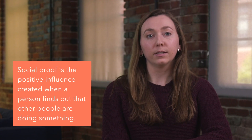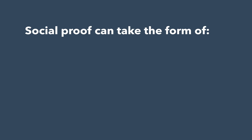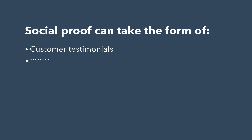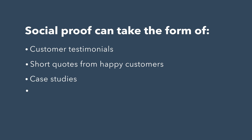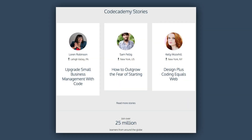You can tell visitors as much as you'd like about how good your offer is, but the truth is it's more compelling for them to hear about it from someone else. This is where social proof comes in. Social proof is the positive influence created when a person finds out that other people are doing something. If site visitors see that people who have consumed the offer are speaking positively about it, they're more likely to think positively about it too. Consequently, they might be more likely to fill out the form and convert to a lead. Social proof can take the form of customer testimonials, short quotes from happy customers, case studies, embedded social media posts, number of downloads, users, and more. Code Academy, an online interactive platform that offers free coding classes, leverages customer testimonials as one form of social proof on one of their landing pages.